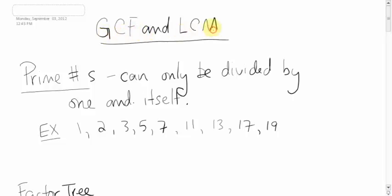GCF and LCM is our next lesson. GCF stands for greatest common factor and LCM stands for lowest common multiple. A factor is a number that can go into or divide another number without getting a decimal. We'll talk about these things which are handy, especially when we get to the next unit, which is fractions.